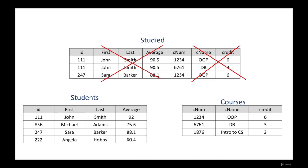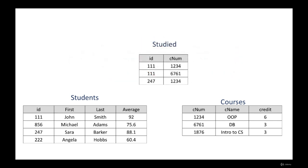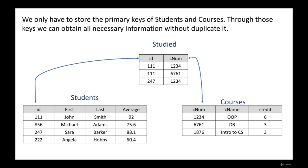So our studied table shrinks and becomes very small — it saves only two columns: the ID, which is the student ID, and the course number which the student took. Those columns point to the primary keys in the students and courses tables. We only have to store the primary keys of students and courses, and through those keys we can obtain all necessary information without duplicating. For example, the first row in the studied table shows that student 111 took course 1234. To find the student's name, we follow the students table and find student 111.